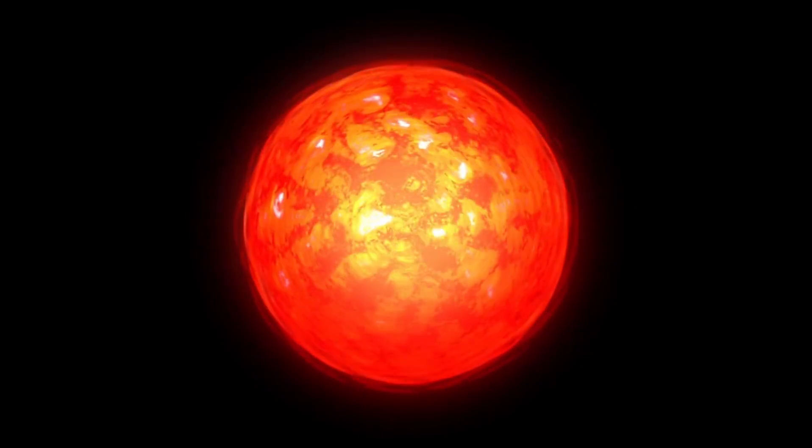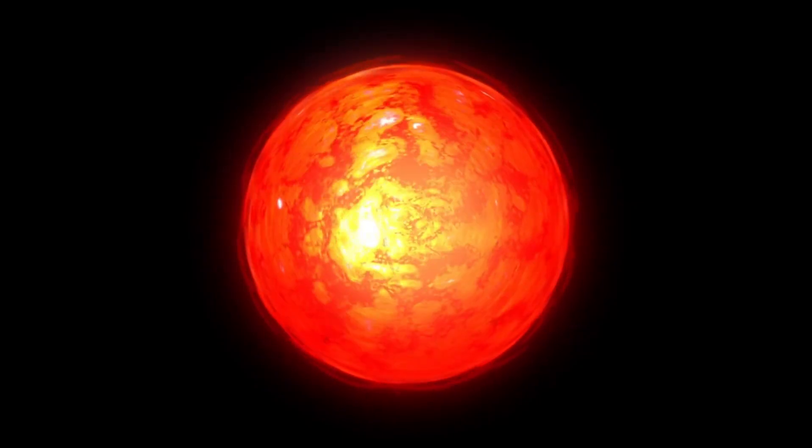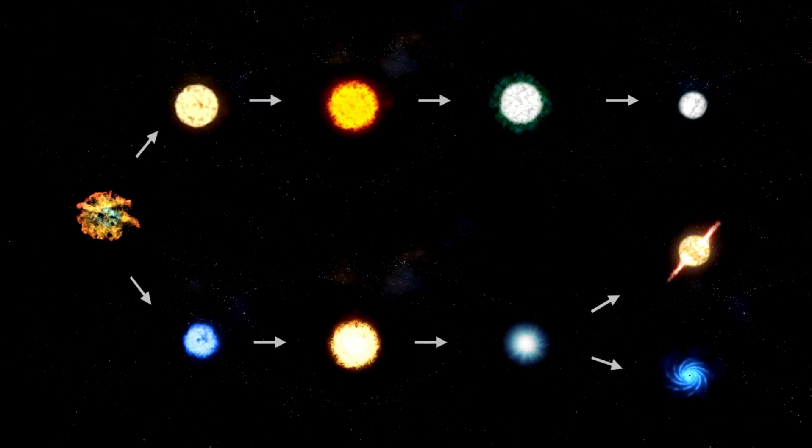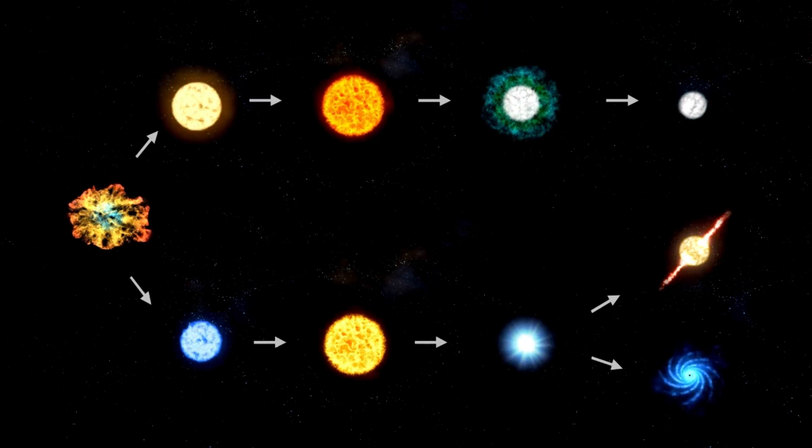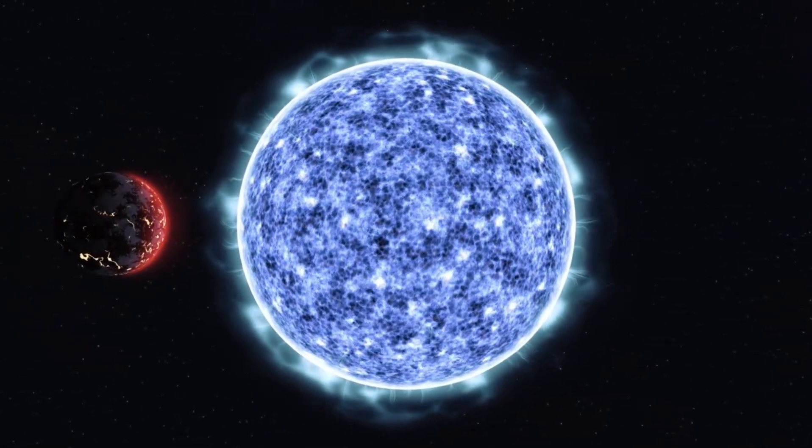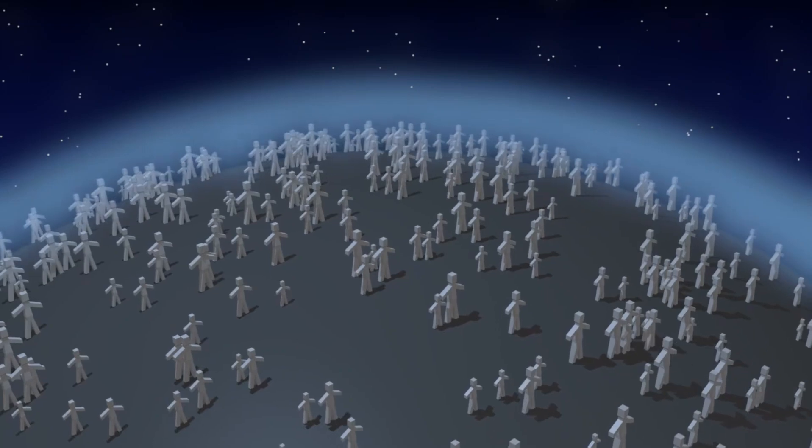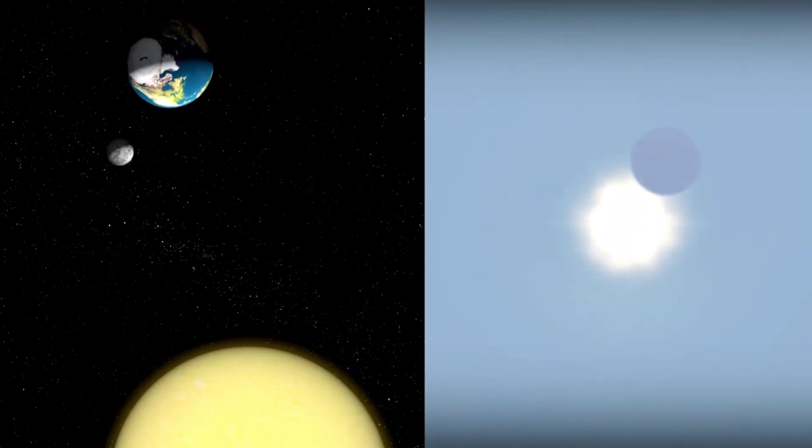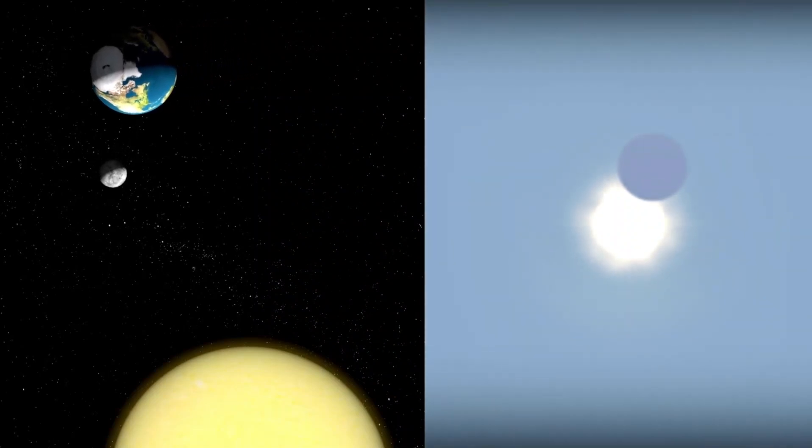making it difficult for scientists to place it neatly into existing planetary categories. This unique classification presents a significant challenge for scientists who are trying to understand what K2-18b is really like. To put things in perspective, planets like Earth and Mars serve as benchmarks for much of our hypotheses about life and planetary conditions. However, sub-Neptunes like K2-18b have no direct counterparts in our solar system, making them particularly mysterious and difficult to study. The data collected so far, however, has opened up some fascinating possibilities.